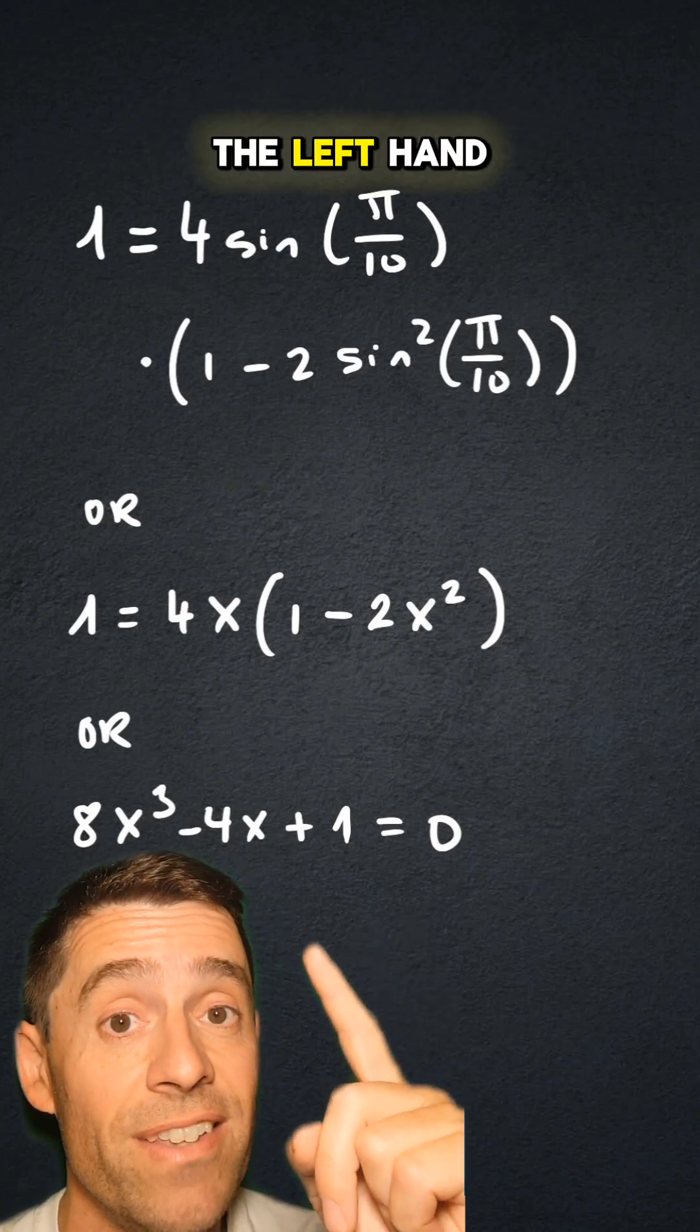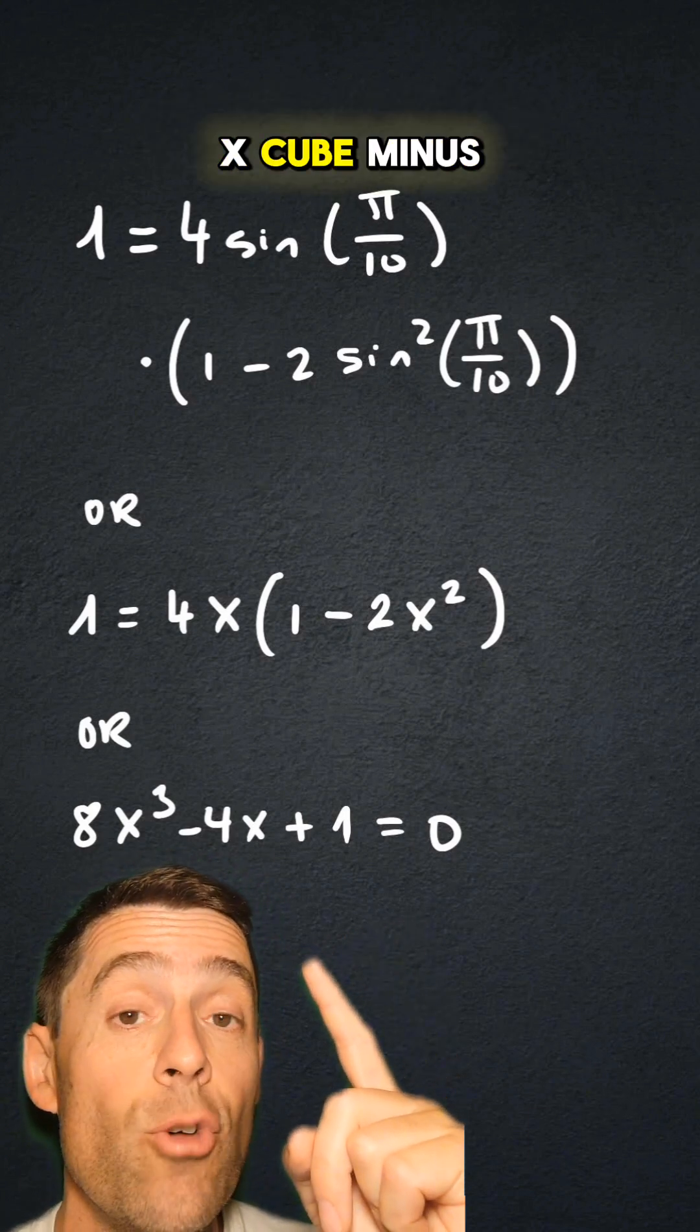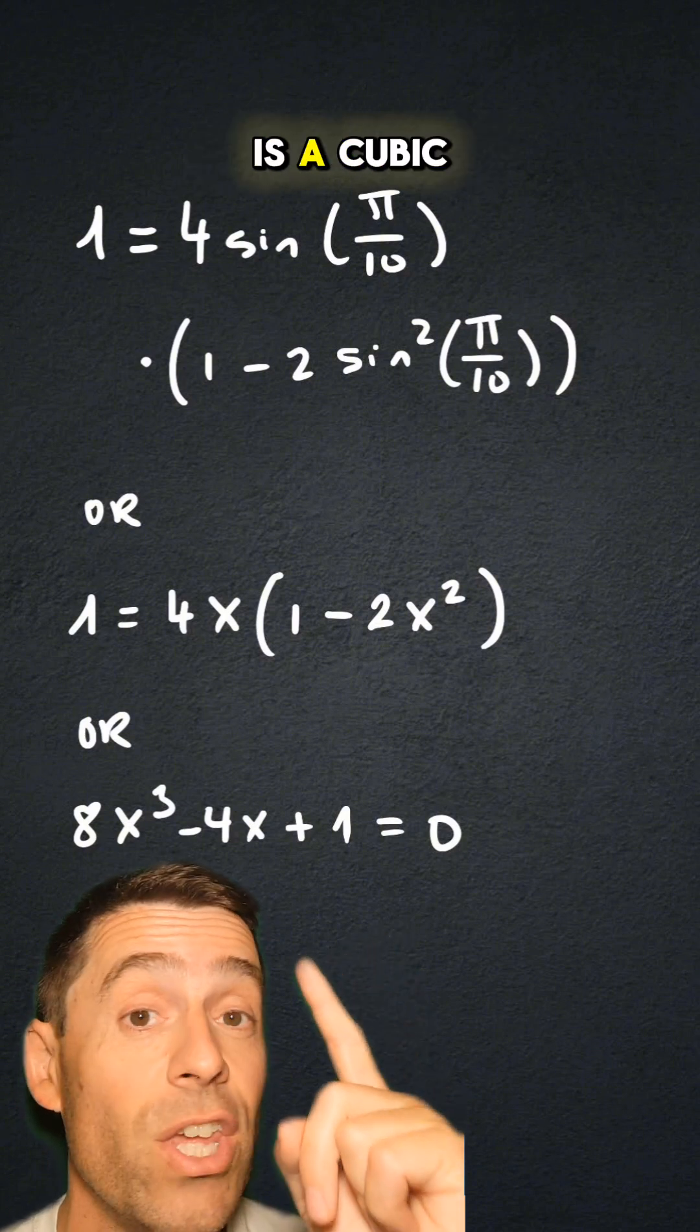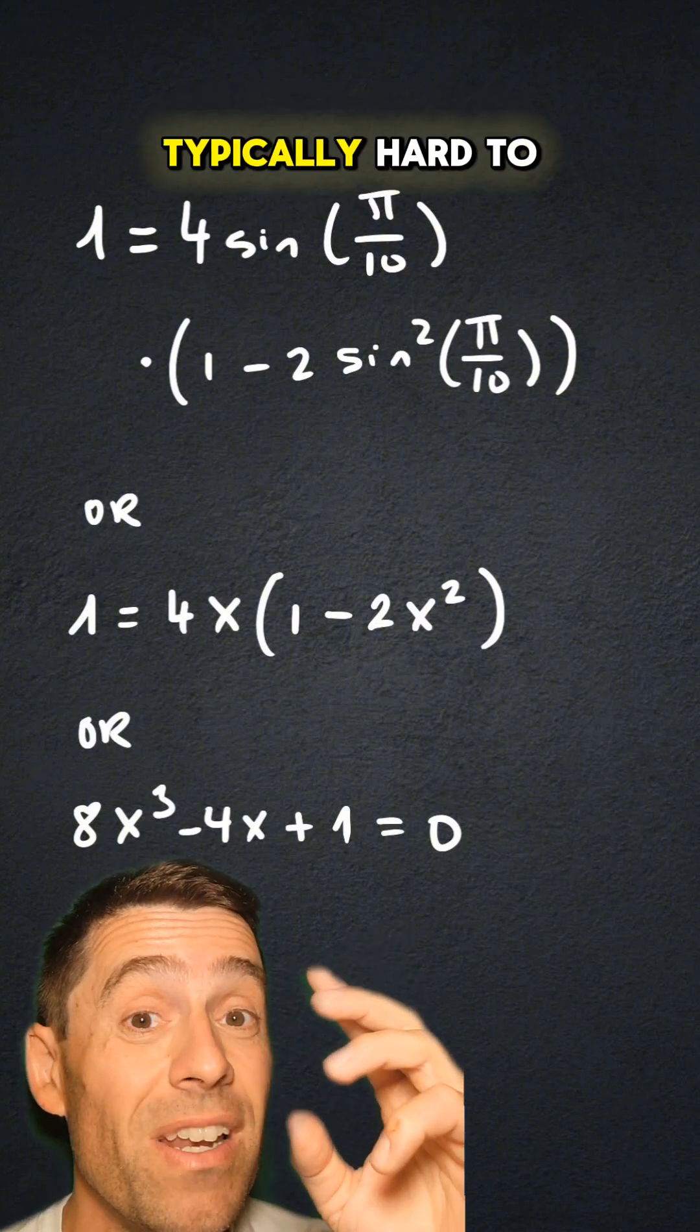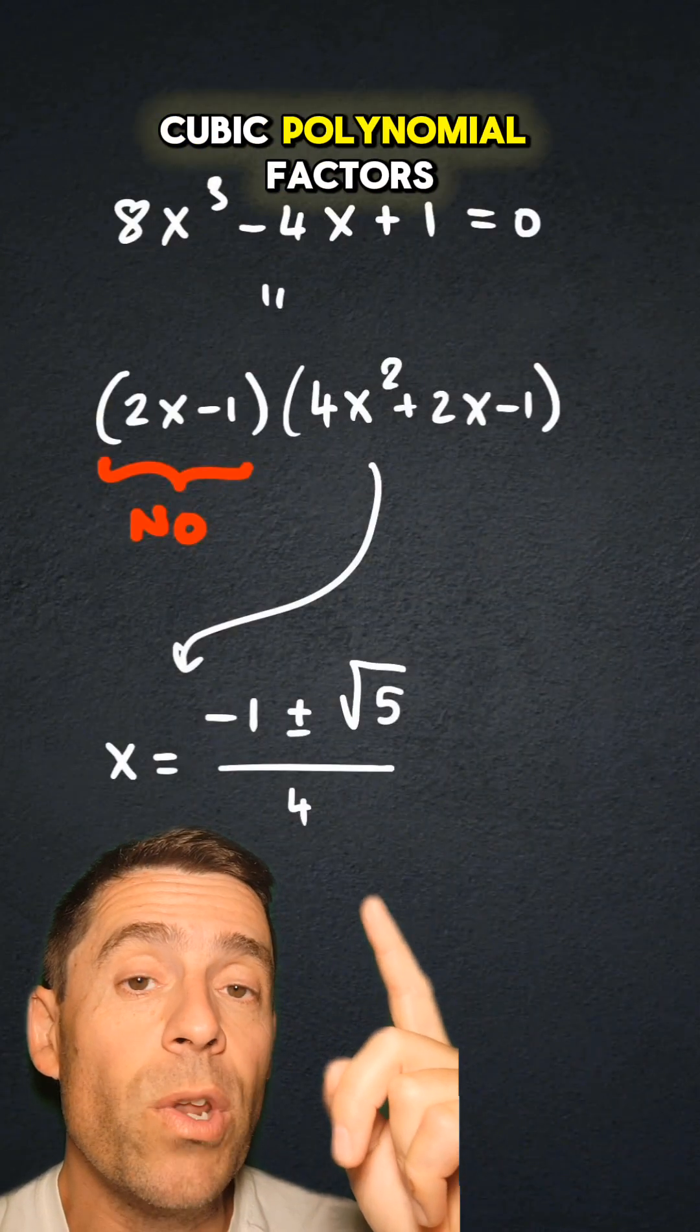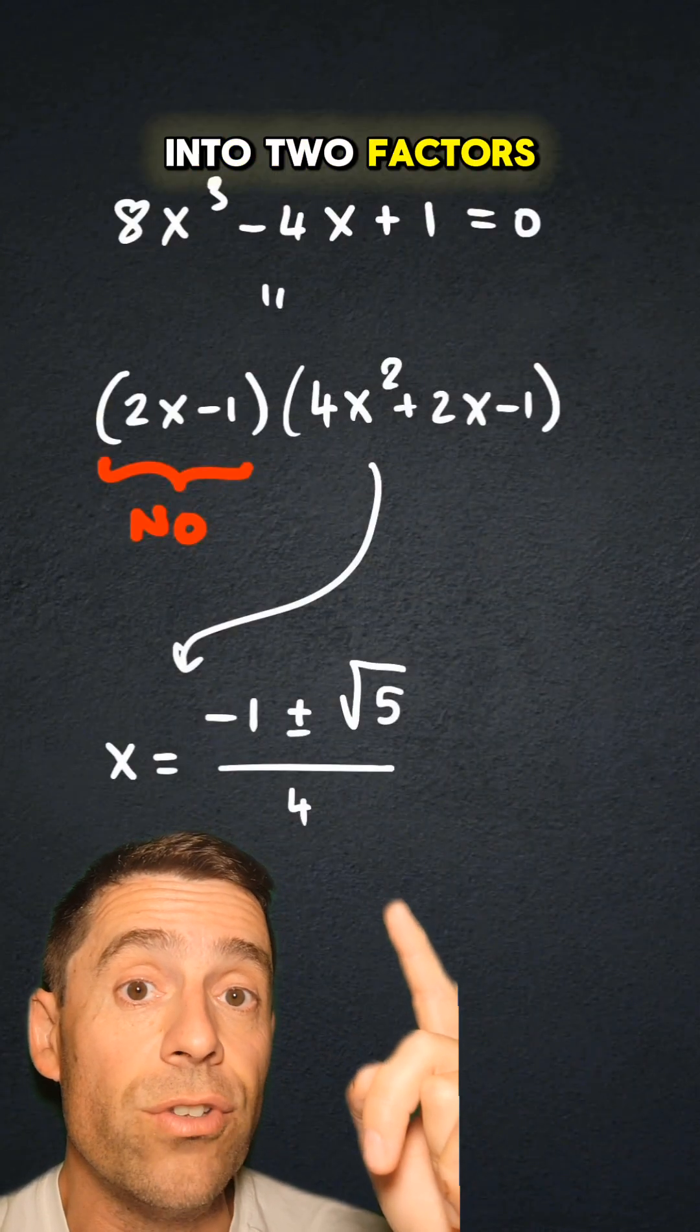And if we bring everything to the left-hand side, that is 8x³ minus 4x plus 1 equals 0. And now, this is a cubic equation, which are typically hard to solve. But we are lucky, and that cubic polynomial factors into two factors.